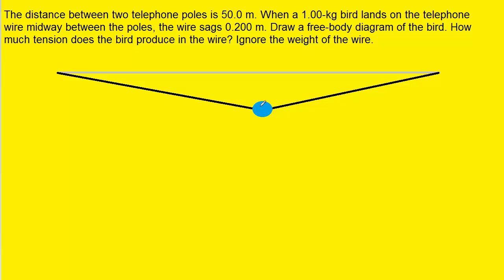We were given some distances in the question and we want to label those distances next. We note that the distance from one pole to the other is 50 meters. But since the bird is standing midway between the poles, the distance from here over to one of the poles is going to be 25 meters.